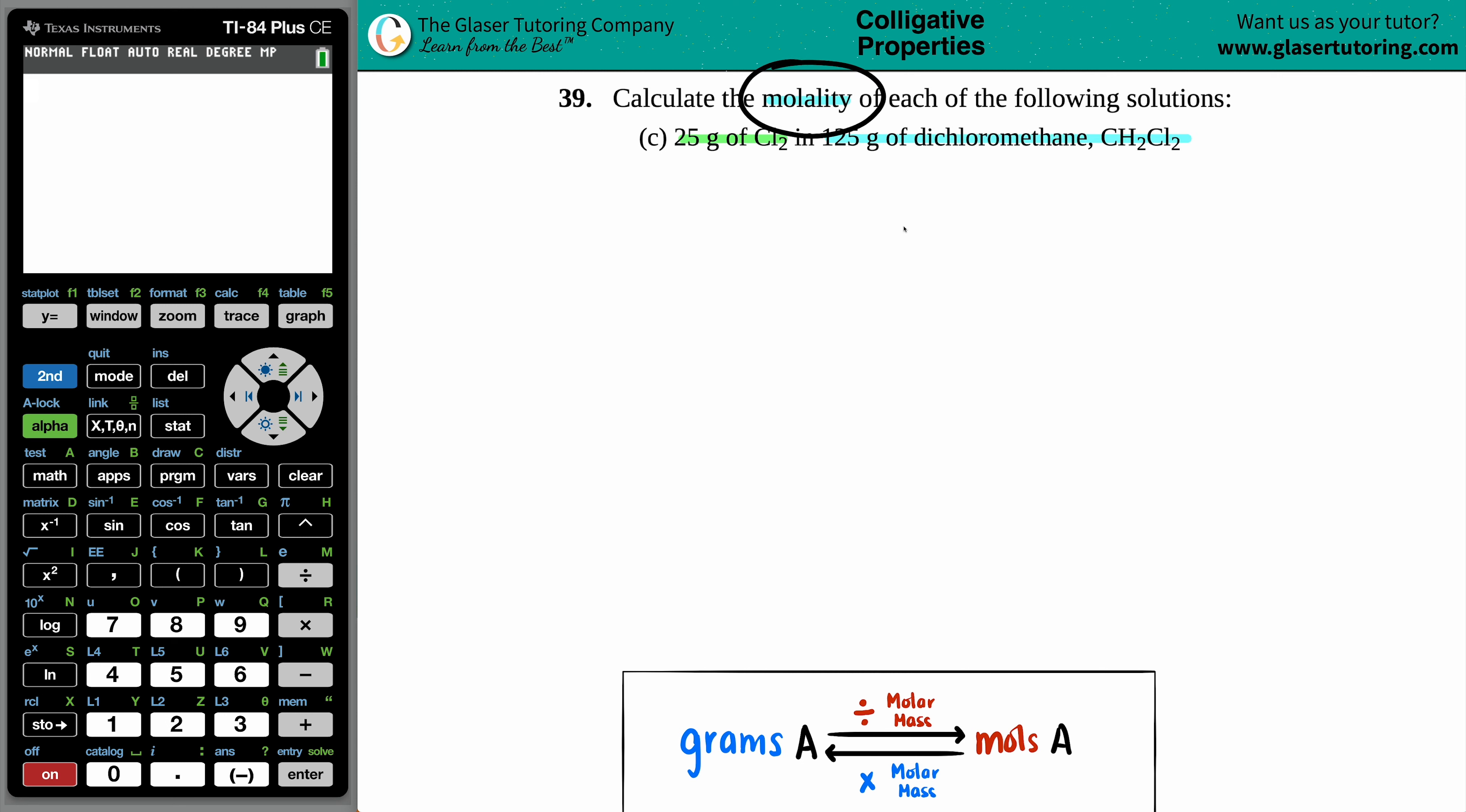And we have to find the molality. Now there's only one general formula to solve for molality, and that is this one right here. Molality, not molarity, molality equals moles of your solute divided by your kilograms of your solvent.